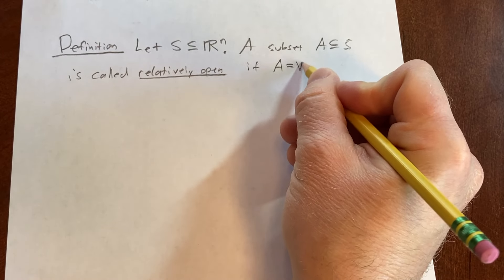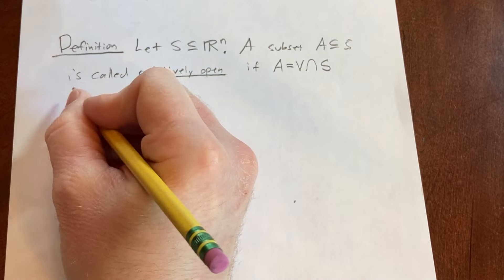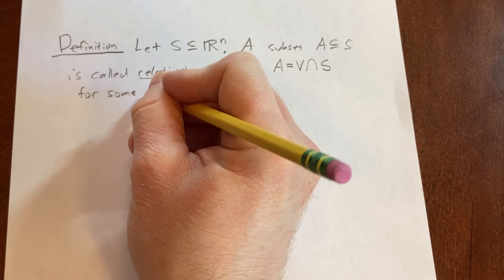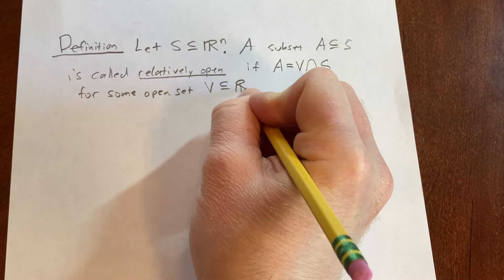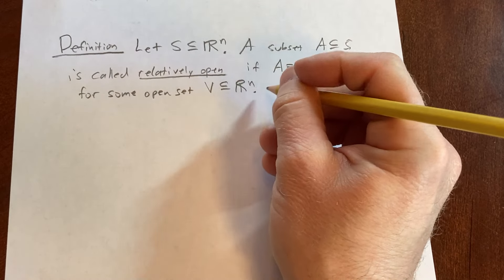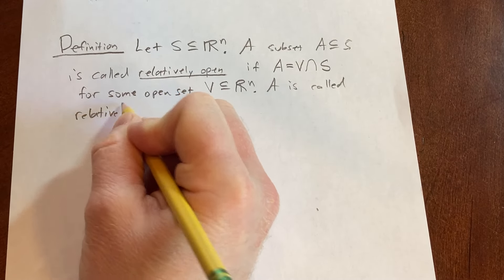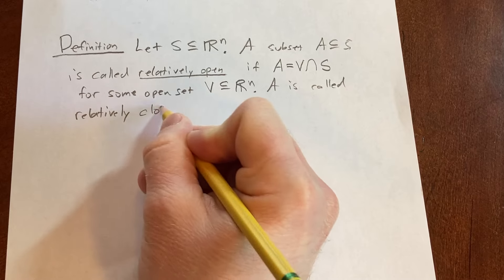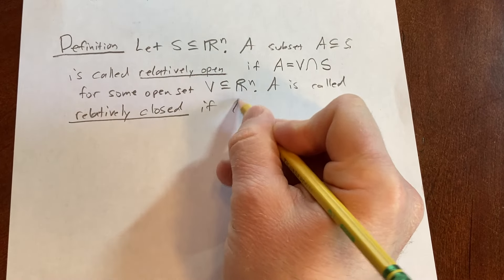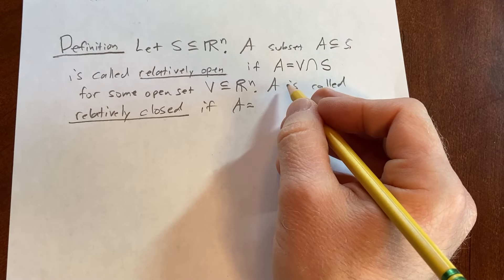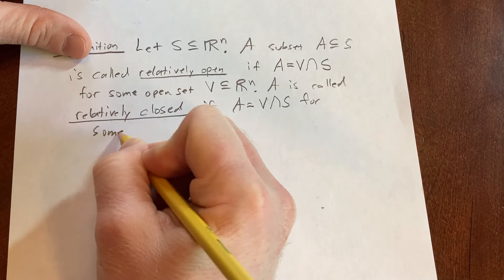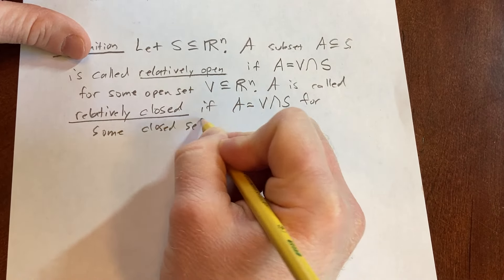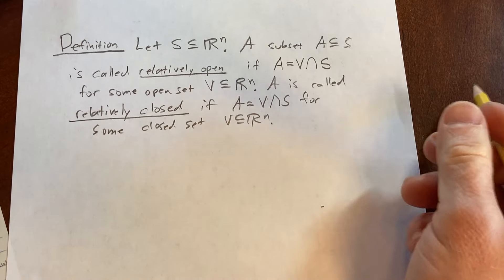A equals V intersect S for some open set V contained in R^n. And A is called relatively closed if A equals V intersect S for some closed set V which is a subset of R^n. So there's the definition.